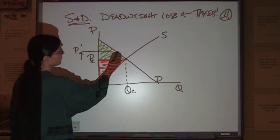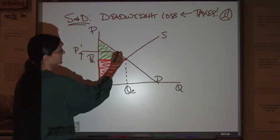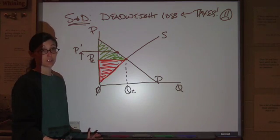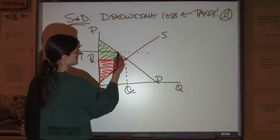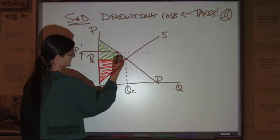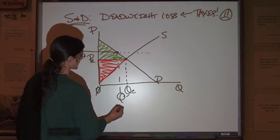Now, this is the quantity that's actually going to be bought and sold in the market because you go with whichever one's lower. You hit demand before you hit supply. So, that's the quantity that's actually going to be bought and sold in the market.